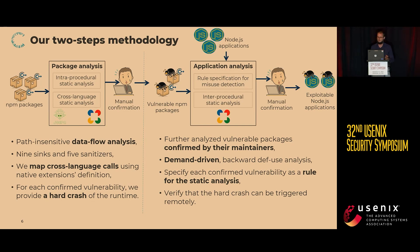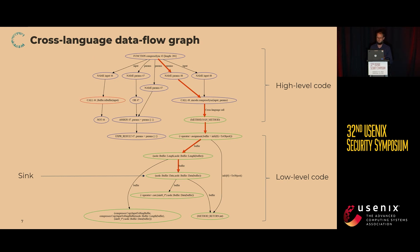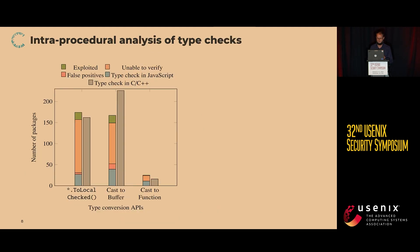An interesting data structure we propose is a cross-language data flow graph that has nodes and edges from both JavaScript and C/C++ code in a single structure. When performing vulnerability detection, we look for flows to particular sinks, usually in the C++ code, and look for sanitizers that could be in either the C code or the JavaScript code. This justifies the need for cross-language analysis — otherwise, alerts sanitized in JavaScript would be false positives.